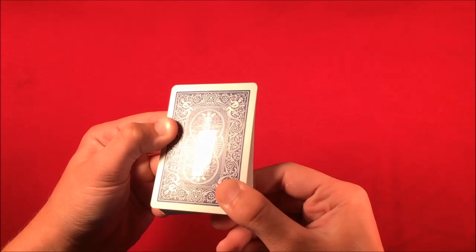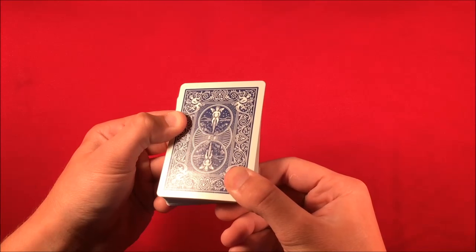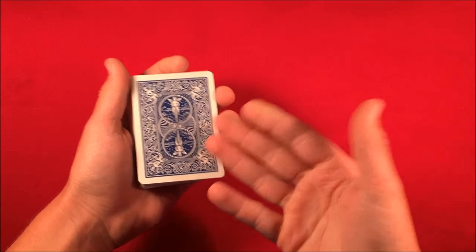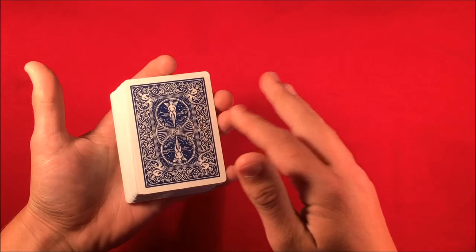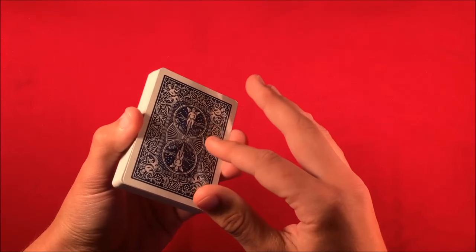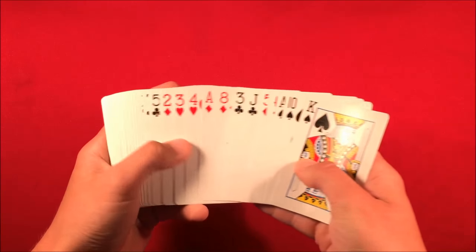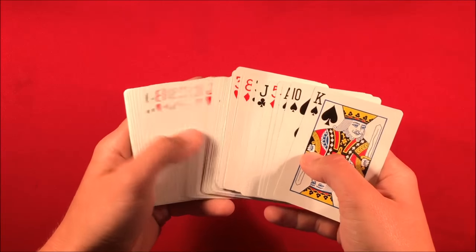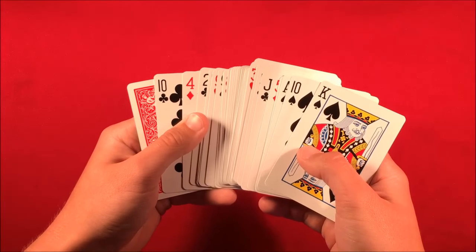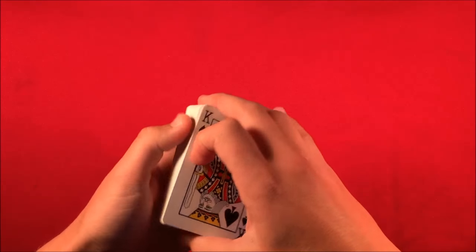So to a spectator, they're not actually going to be able to see this because if you have it in normal lighting like this, you can't really notice it unless you're really trying to look at that. So in this case, you go up to a spectator and you can flip the deck face up. You can have them pick any card they want.